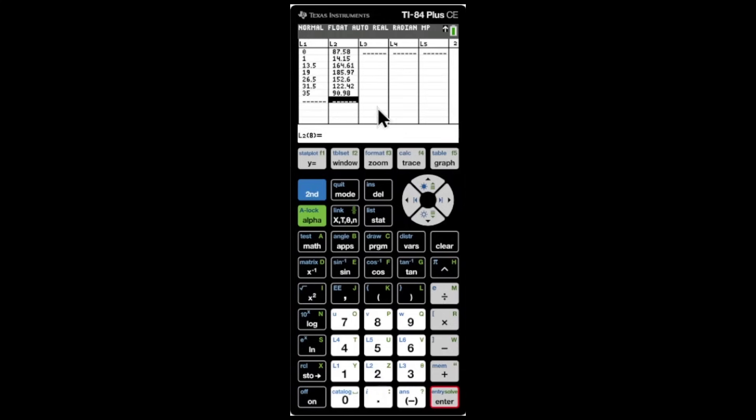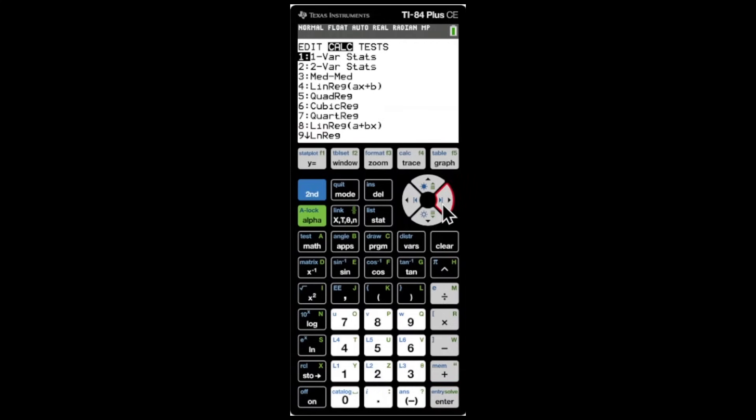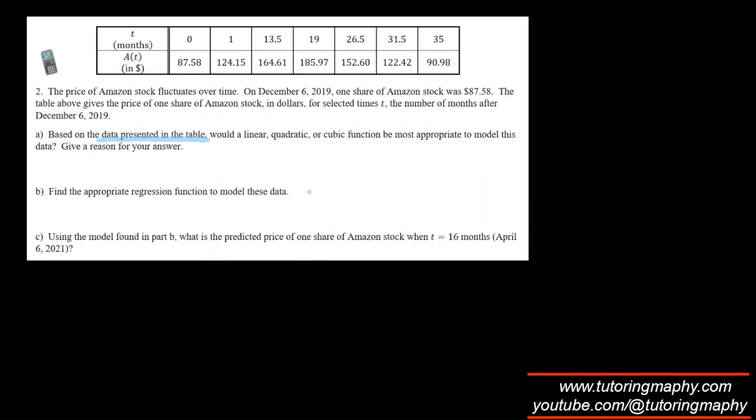The first number is 0. We type in enter. Once we type in everything, it's going to look like this. When we click on STAT and then go right into the calculator, option 5 is quadratic regression. We click on enter, we go to calculate, click on enter again, and this is our model.